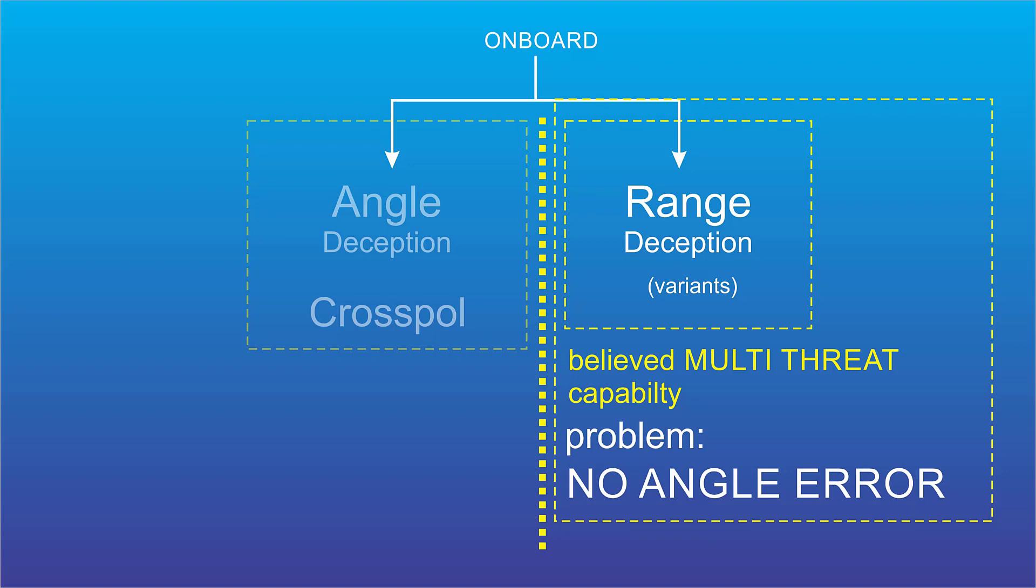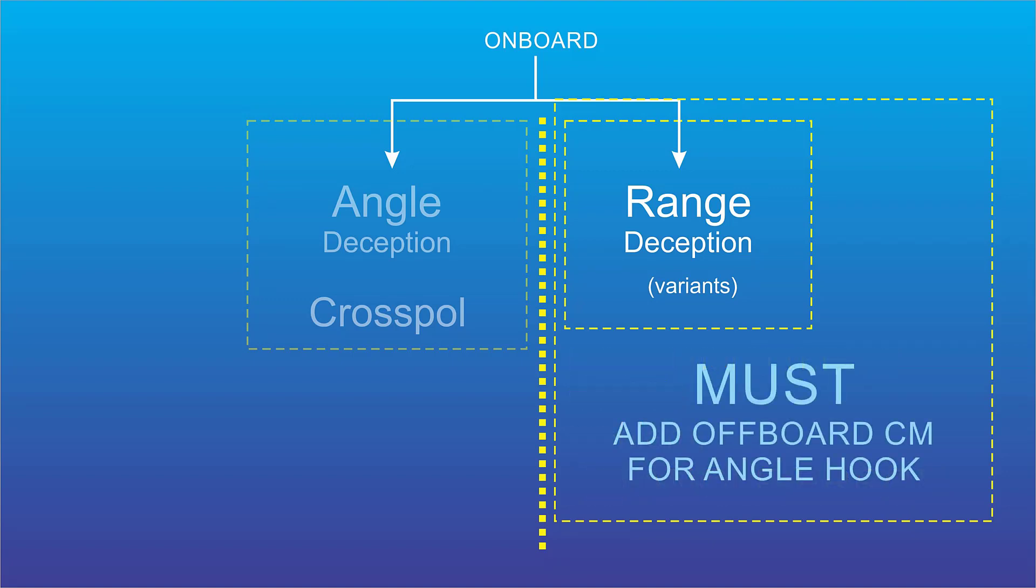But phased array antennas puts the counter missile solution back in a corner. The only way to get the angle piece is to go back to off-board decoys and chaff in order to get that to happen.